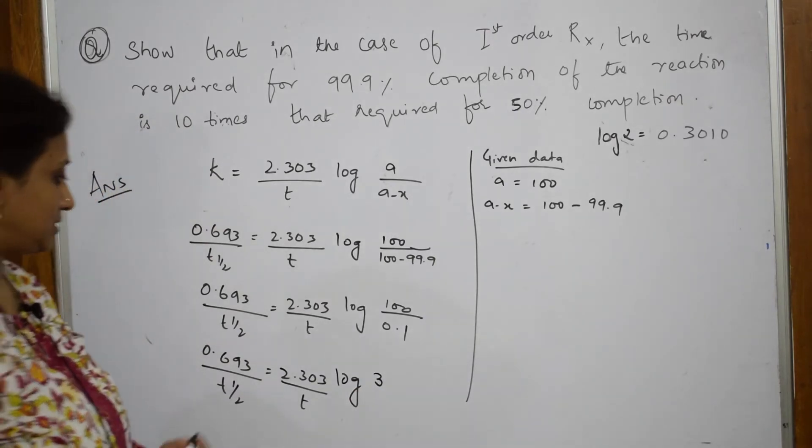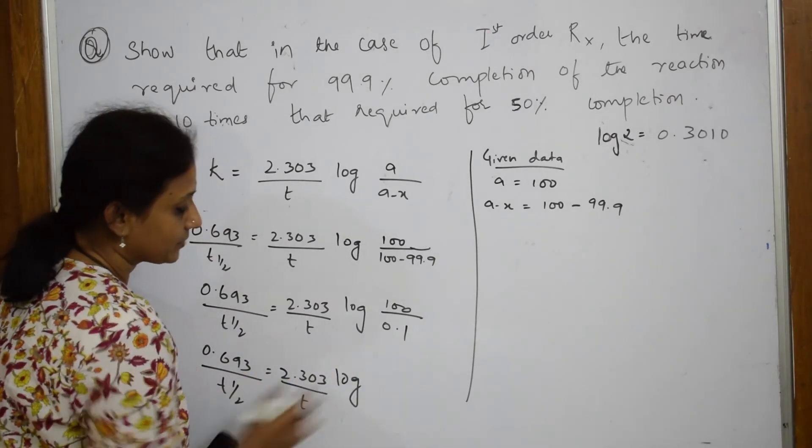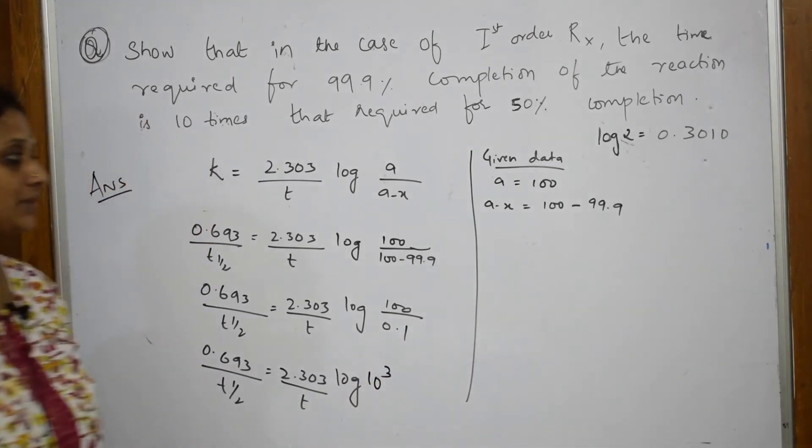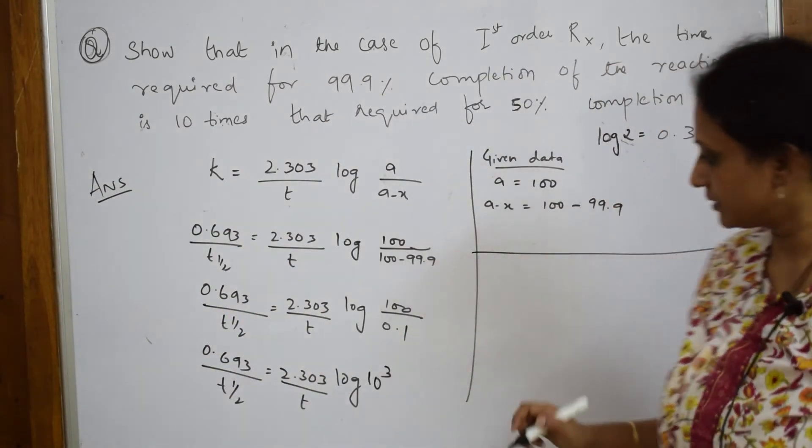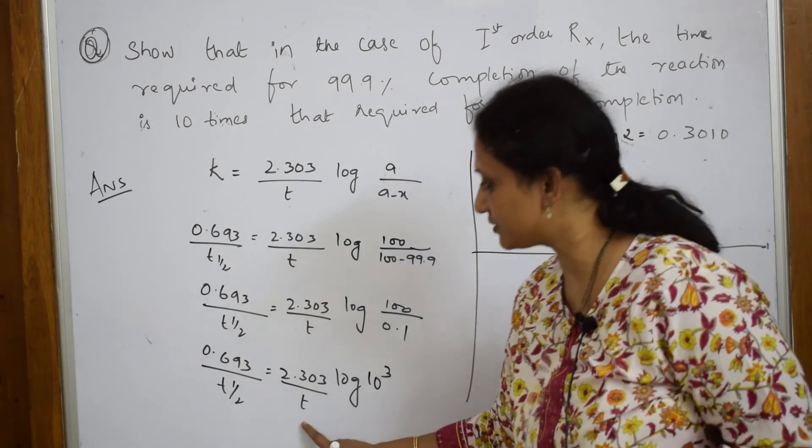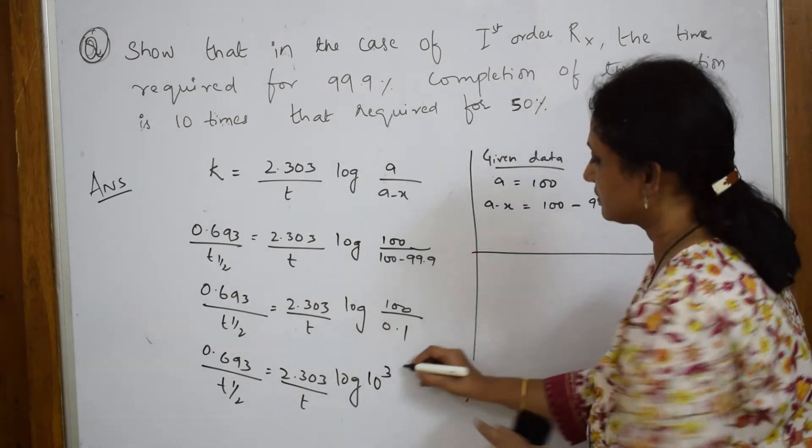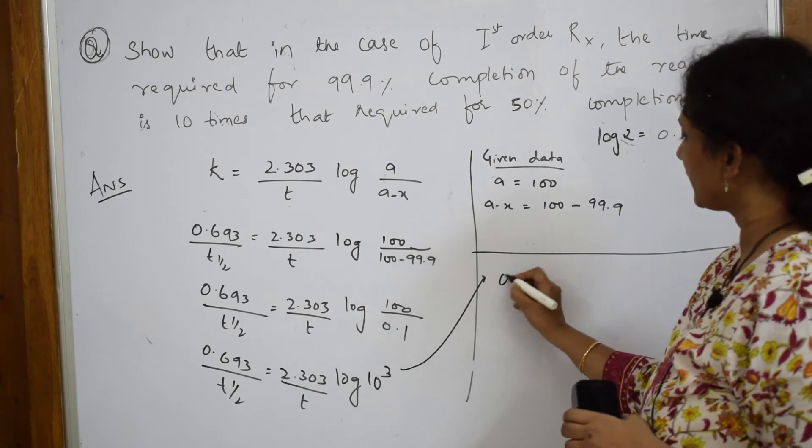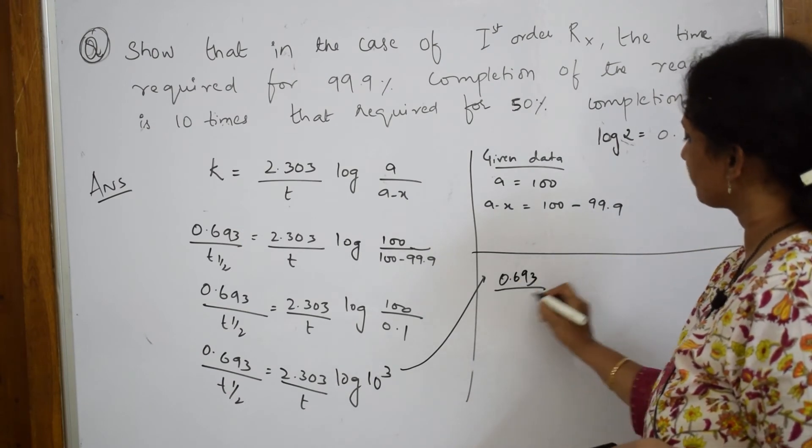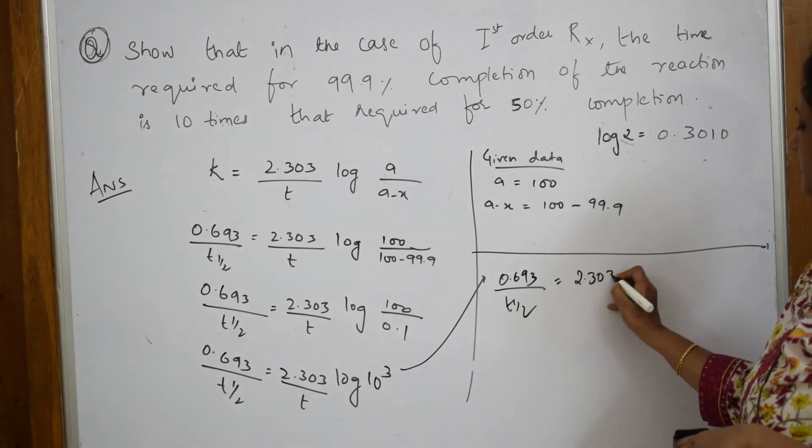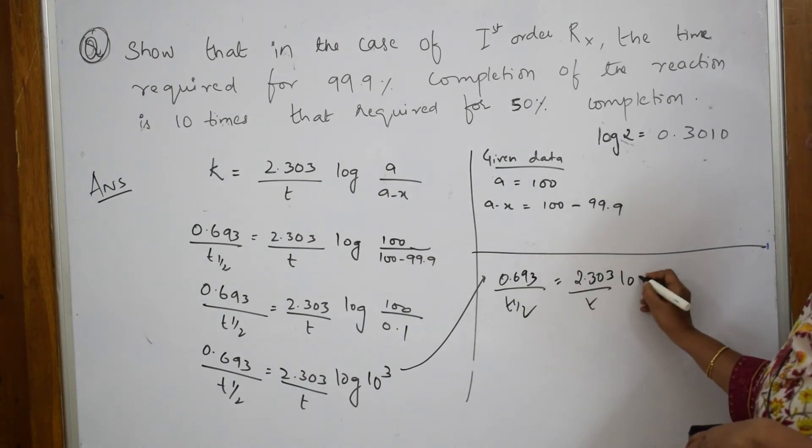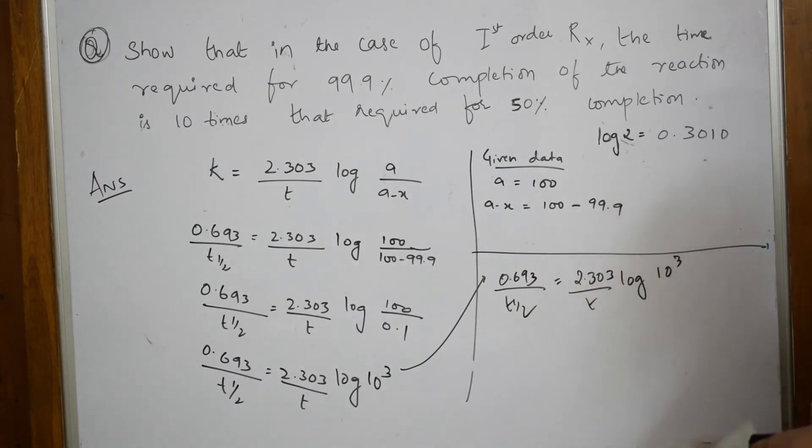If I solve this, what do I get? 0.693/t_half = 2.303/t log(100/0.1). Now if I solve this, I get 0.693/t_half = 2.303/t log(10^3).